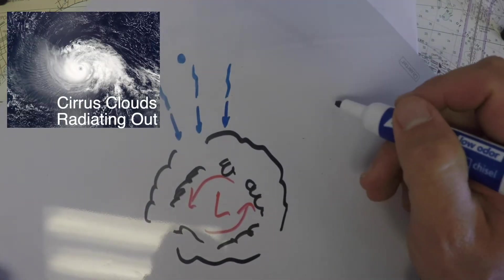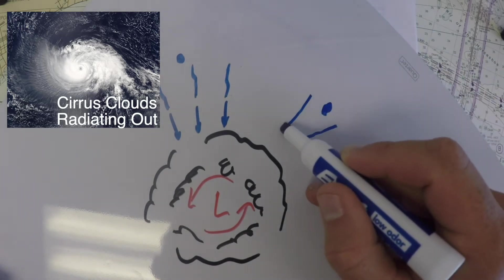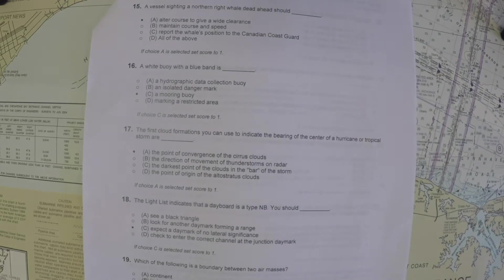So that's what they're getting at here. If you were in a different location, if you were over here, the cirrus clouds to you might appear to converge towards the center of the low. So it's not a very good question, in my opinion, by the Coast Guard, but that's where they're getting at.